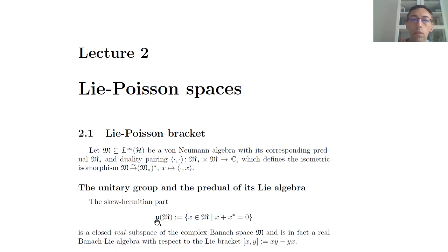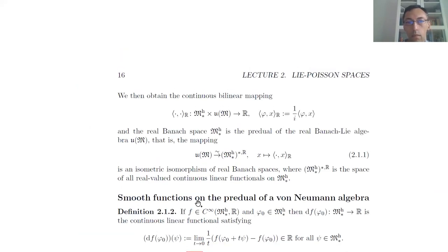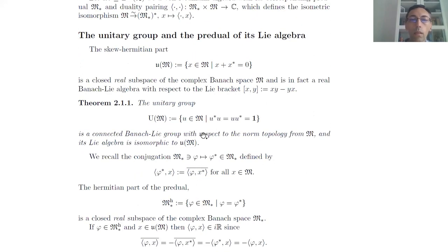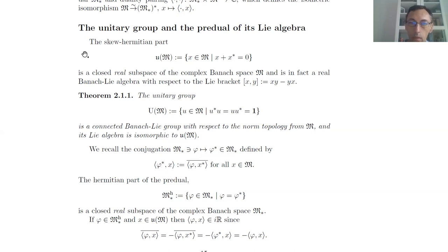We use the notation u(M) for the skew-adjoint elements of our algebra. This is a closed real subspace — not complex but rather real — and the commutator of any two skew-adjoint elements is again skew-adjoint, so it is actually a real Banach algebra. The basic theorem in connection with this is that the group of unitary elements in our algebra has the canonical structure of a connected Banach Lie group with respect to the norm topology of M, and the Lie algebra is isomorphic to u(M). The exponential map from the algebra to this Lie group is given by the well-known power series.